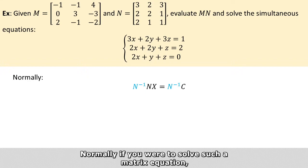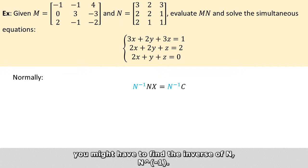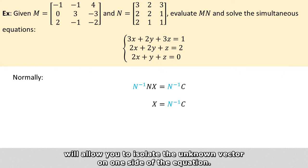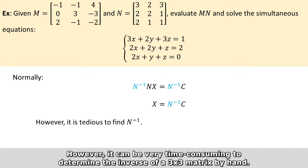Normally if you were to solve such a matrix equation, you might have to find the inverse of N and then multiply both sides of the matrix equation by the inverse of N, which will allow you to isolate the unknown vector on one side of the equation. However,